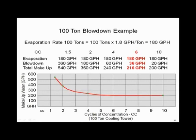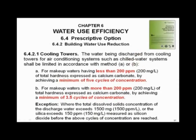So what are reasonable cycles of concentration to specify? ASHRAE 189.1 — the green building code adopted by the Army Corps of Engineers and many cities — defines cycles of concentration for the first time. If you have less than 200 parts per million of solids in your water, a minimum of five cycles of concentration is required. If you're in the west with hard water over 200 parts per million, three and a half cycles applies. The point is you're going to be asked to control your blowdown rates based on cycles of concentration.